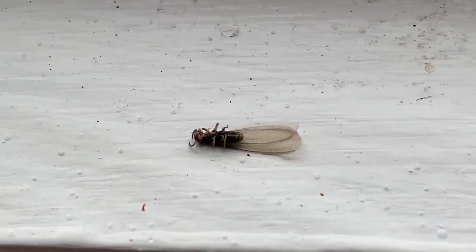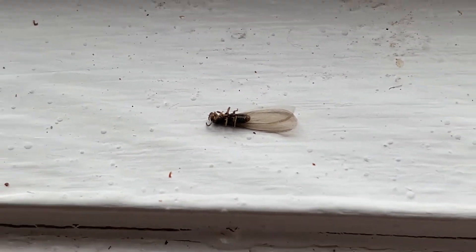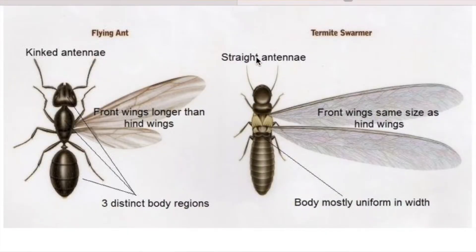Here I was able to find a dead termite swarmer, and if you look at it next to a worker termite you can tell their body shape is exactly the same. They have a head and thorax connected together, whereas flying ants have three distinct body parts. The most common time to see flying termites is in the springtime, very similar to ants. Now that I've shown you pictures and videos of flying ants and flying termites next to each other, let's look at this graphic and I'll explain the number one easy way to tell them apart.